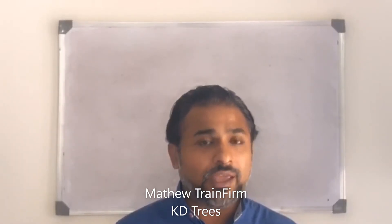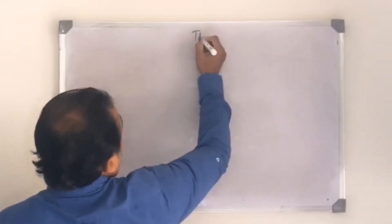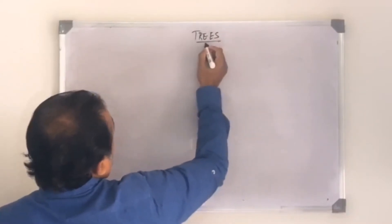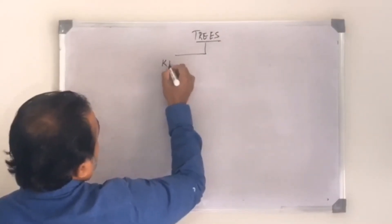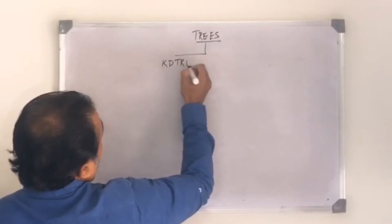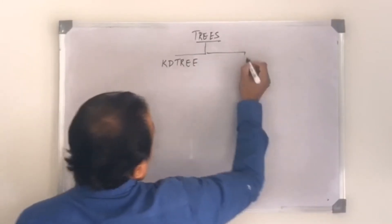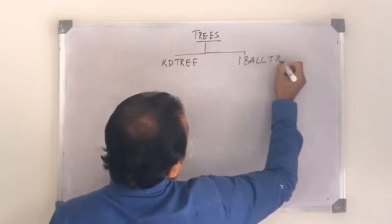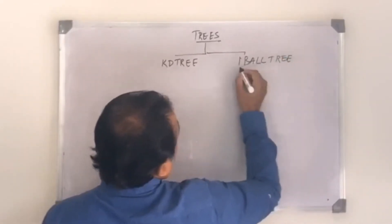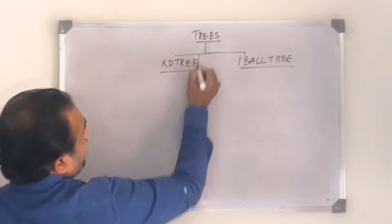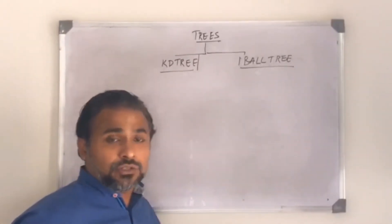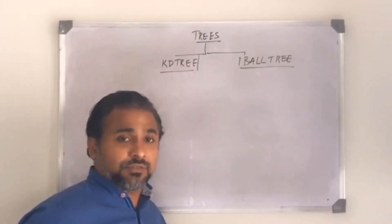Now let's see how trees are going to help you in reducing the computational cost of a KNN algorithm. I have two types of trees: one is a KD tree and the other one is called a ball tree. I'm going to discuss ball tree in my upcoming video. In this video we will focus on KD tree and discuss when we can use it and what are its limitations.